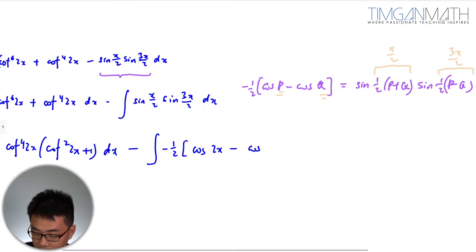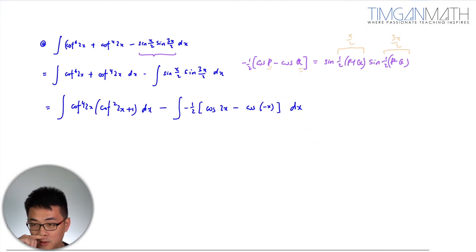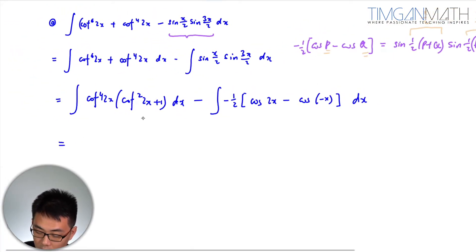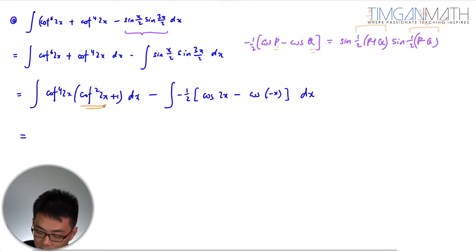Okay dx, great. So once this is done that's pretty okay. I'm going to factorize this out and now cot cot square 2x is very important. You need to know that this expression is not given in MF26.